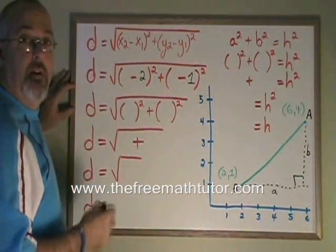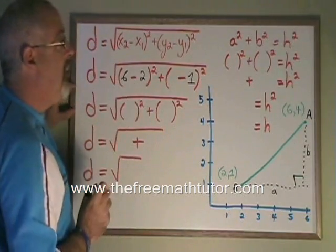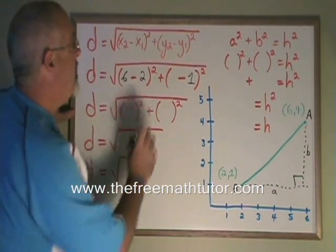Point A is therefore the second point, and our x2 is 6, our y2 is 4.